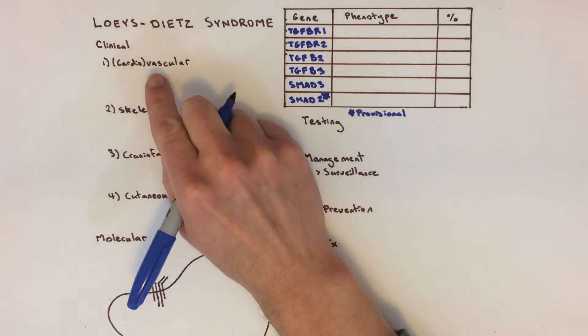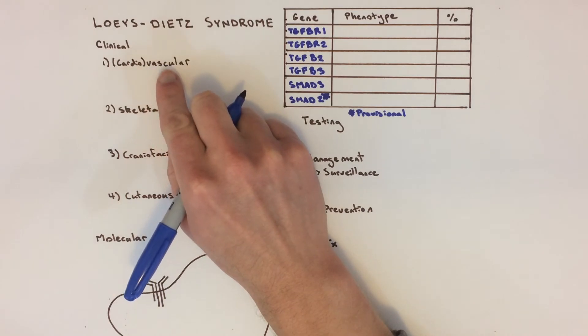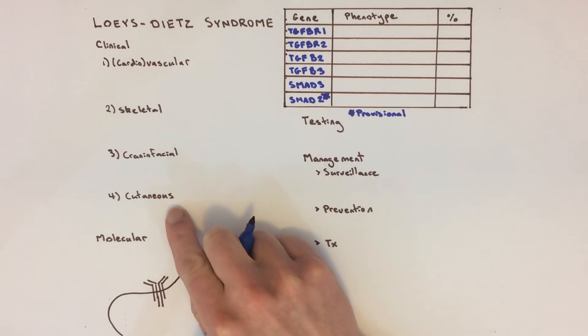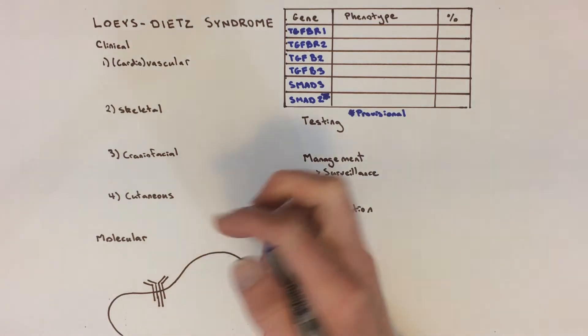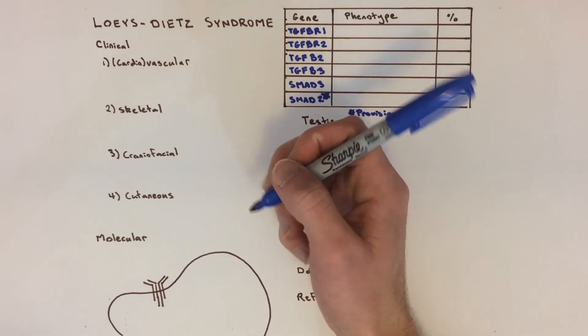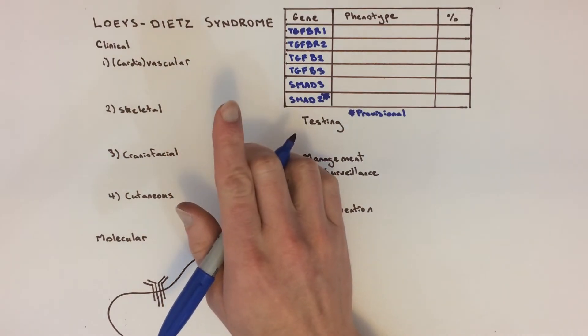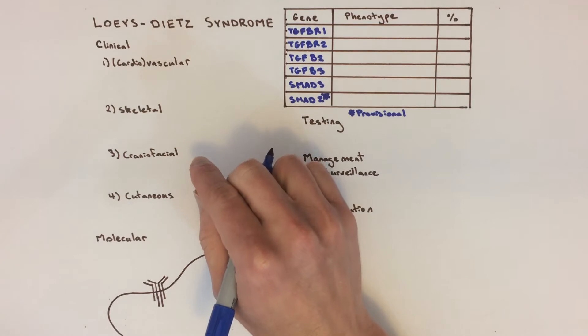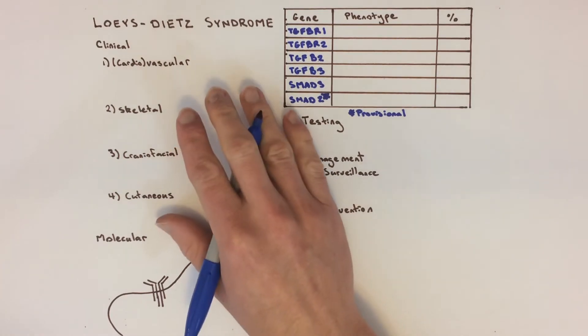Four main organ systems are affected in Loeys-Dietz syndrome: vascular, skeletal, craniofacial, and cutaneous features. A few miscellaneous features affect other organs too. It's important to remember that a given patient will have some, but not all, of the possible features, and that the overall severity of the disease varies from person to person.